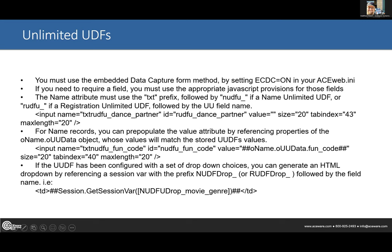For example, 'txt-r-u-d-f-u_dance_partner' — where 'dance_partner' is what you've called the field in Student Manager. If you are capturing a dance partner, another option to consider is the partner enrollment package — see your technician if you don't know what that is, or go to our ACE Web demo and play around with it. It's really powerful for getting partners registered and enrolled in courses that require partnership, like dance courses.